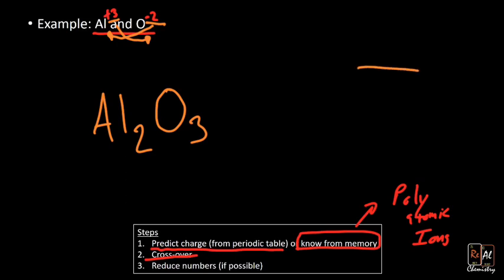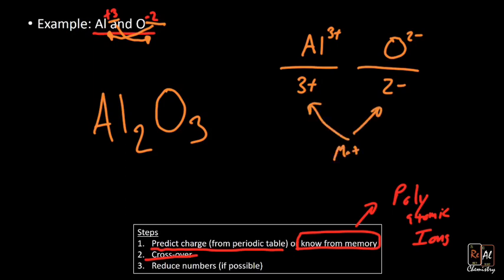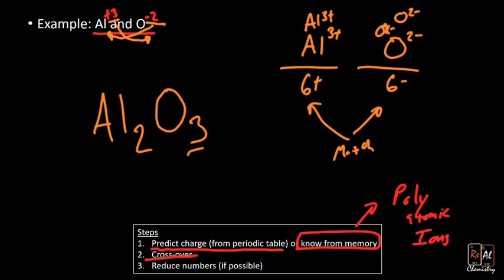The reason crossing over works is because it makes our compound neutral. Let me draw that out — I'll put two columns: aluminum on the left with a +3 charge and oxygen on the right with a -2 charge. If I have three oxygens at 2- each, that adds up to 6-. And if I have two aluminums at 3+ each, that gives me 6+. Six plus and six minus cancel out, making a neutral compound.